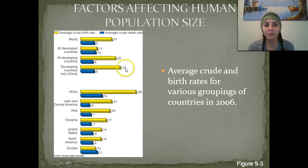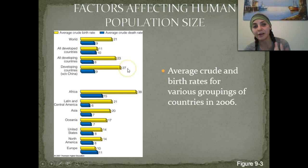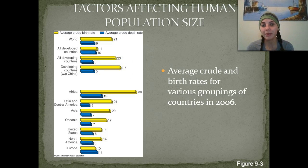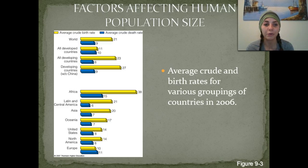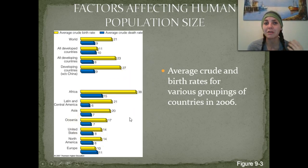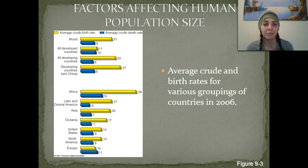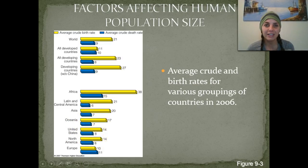The developing countries without China have an even higher birth rate, because China was a developing country but it actually implemented a birth control plan which helped to decrease their population growth. You can go ahead and pause this video, read the different numbers, and look at the differences between birth rates and death rates to get an idea of what type of countries these are — developing or developed.